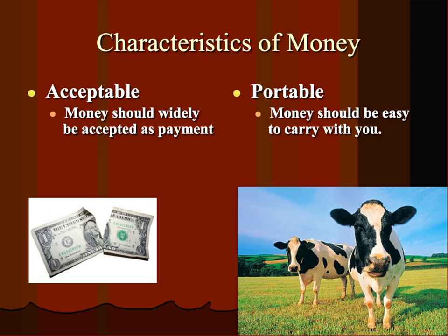It has to be portable. The reason why we use flat dollar bills — flat pieces of paper, even though money is made mostly of cotton — is that it's easily portable. You can carry around a lot of money in a relatively small package. With a cow, not as easily portable.